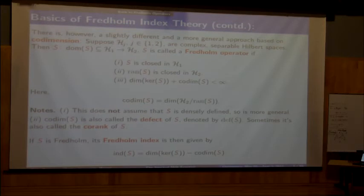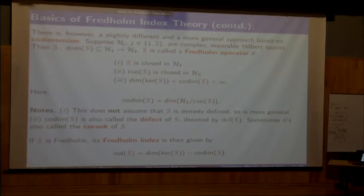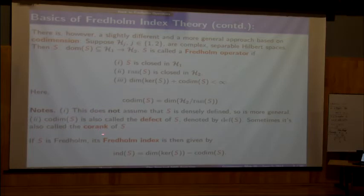We want a slightly different and more general approach. You still start with two Hilbert spaces, but you are not assuming the operator to be densely defined—just assume it to be closed. You do assume the range is closed, and you assume now that the dimension of the kernel of S and the co-dimension of S is finite. Codimension is basically what's missing in the image of S in H2—the dimension of H2 quotient range of S. Codimension also goes under the names defect or co-rank; all those notions in the literature mean the same thing.